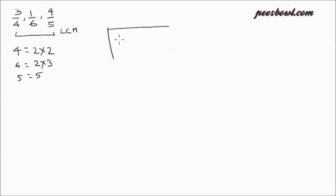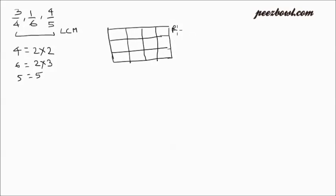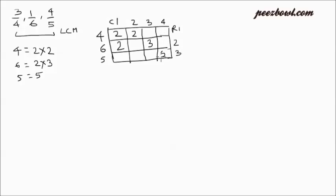Draw a simple table having 3 rows and 4 columns. Row number 1, row number 2, row number 3. Vertically, column number 1, column number 2, column 3, and column 4. In row number 1, write all the prime factors of 4, which are 2 and 2. In row number 2, write all the prime factors of 6, that is 2 and 3. In row number 3, write all the prime factors of 5, that is 5.